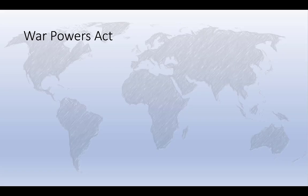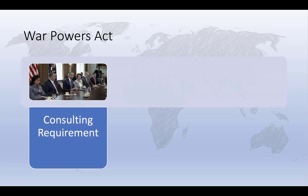The War Powers Act contains three broad provisions. First, it requires that the President consult with congressional leadership before introducing U.S. Armed Forces into hostilities or into situations where the imminent involvement in hostilities is clearly indicated by the circumstances, and after every such introduction requires the President consult regularly with Congress. This is usually referred to as the consulting requirement.